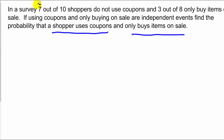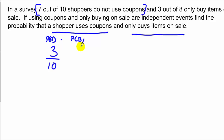Our first data point says seven out of ten shoppers do not use coupons. From that, we can find the shoppers who do use coupons: three out of ten do. So that's P(A). Then we multiply by P(B), the probability they only buy items on sale, which is three out of eight. Multiply those two together and we get nine out of eighty — that's our probability.